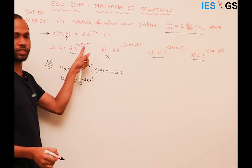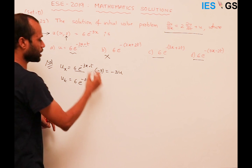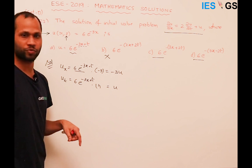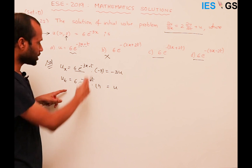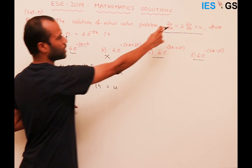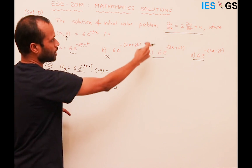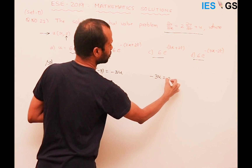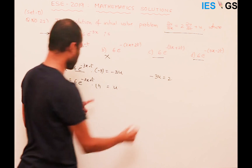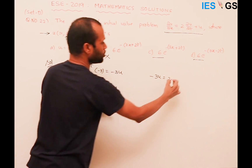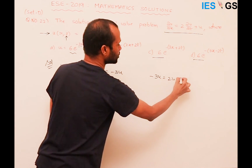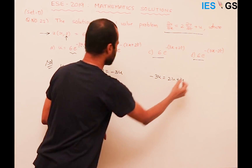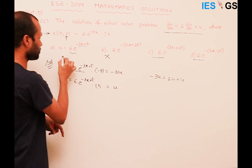Differentiating the exponent with respect to t gives 1, so ∂u/∂t = u. Substituting into the PDE: −3u = 2(u) + u = 3u, which gives −3u = 3u. This is not satisfied, so this option is not the answer.